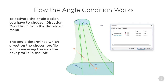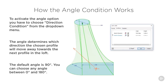You can see the shape has changed — it's swooping to the left instead of the big bulge from the previous image. The default angle is 90; you can choose any angle between 0 and 180 degrees. This illustration shows just one sketch with the Direction Condition, but you can apply it to all sketches in your loft.